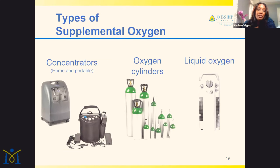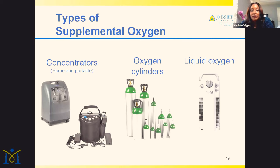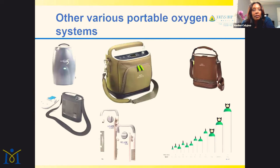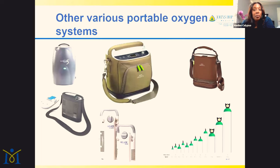The types of supplemental oxygen include home concentrators, portable concentrators, oxygen cylinders, and liquid oxygen. They all serve their purpose and are delivered in very different means. Patients do have a preference as to what they like, and it really is a trial and error to determine which best fits your needs. Portable oxygen systems also come in continuous and pulse flow.